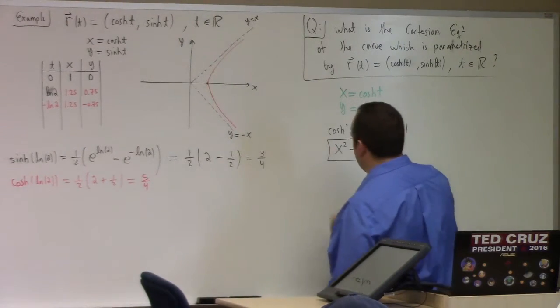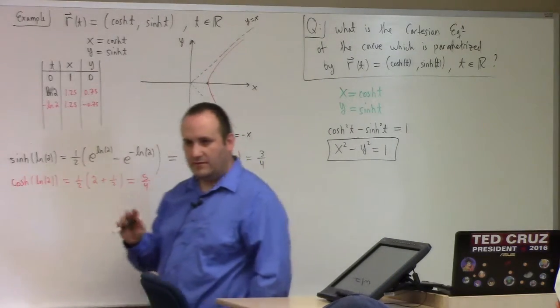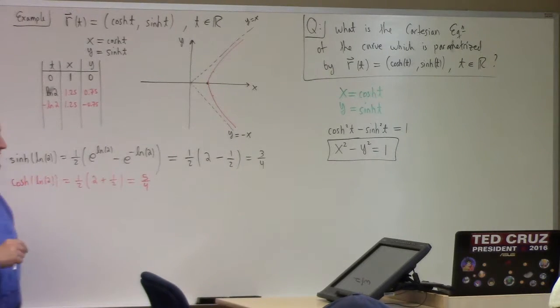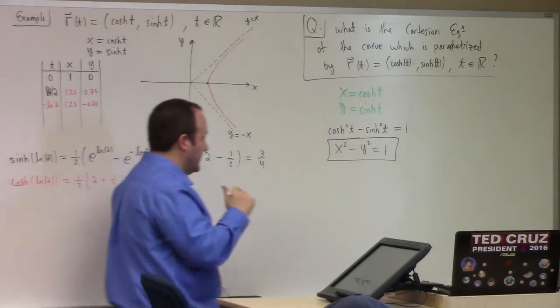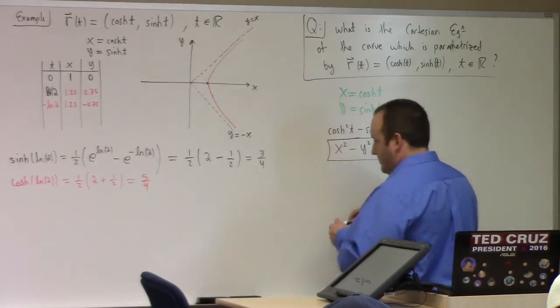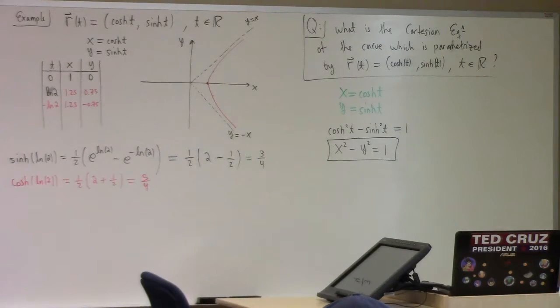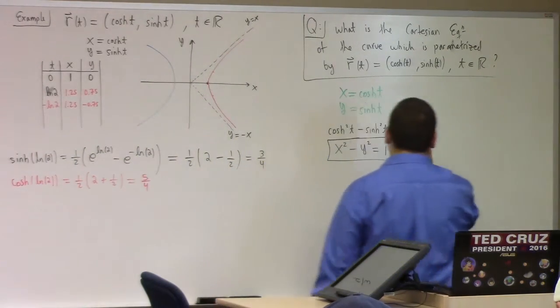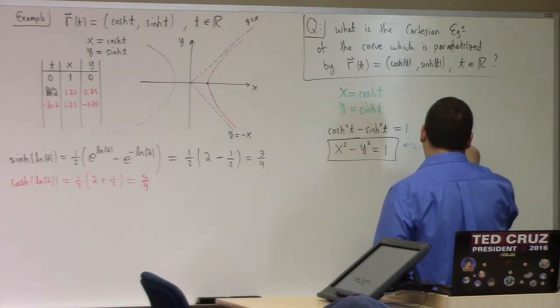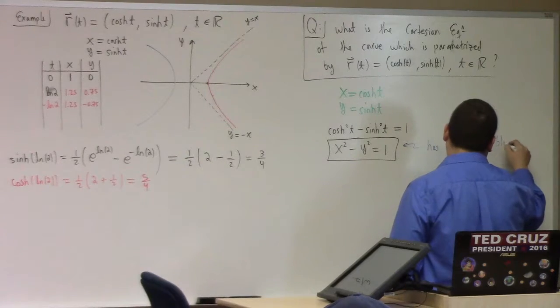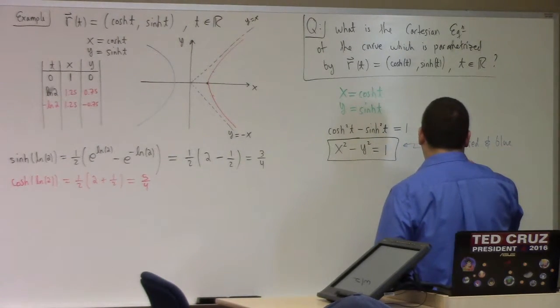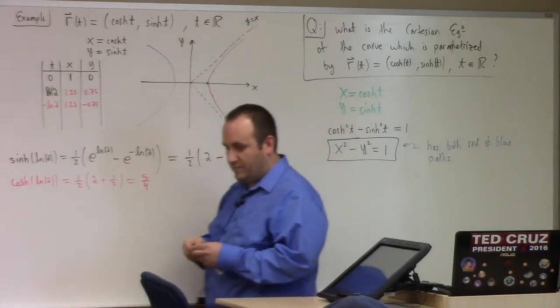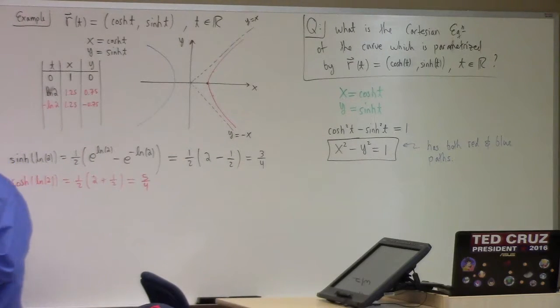Not quite done though. What do I have to say about x? What's the solution set to that Cartesian equation? It's not just the red path. It's a hyperbola, it also has this over here. So this has both the red and blue paths. If I just wanted to describe the red path, what qualifier should I put on the equation? x is greater than or equal to one. Very good.